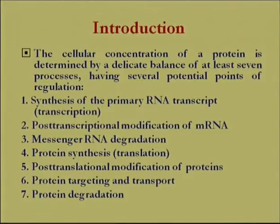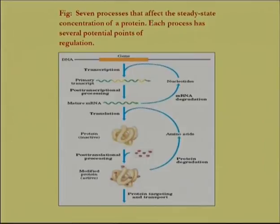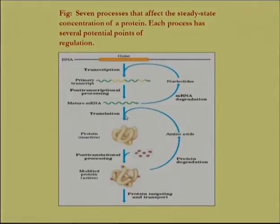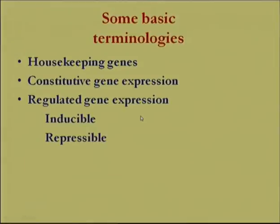Protein targeting and transport, especially in eukaryotes, and protein degradation are also mechanisms for regulating gene expression. This figure shows all the regulatory points at which the organism can exert regulatory control — at the level of transcription, post-transcriptional modification in eukaryotes, translation, post-translational modifications governing enzyme activity, and finally protein degradation for reuse of amino acids.